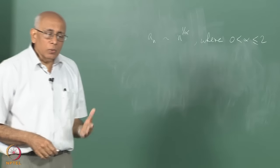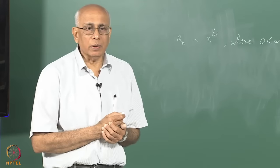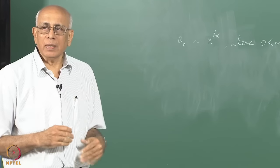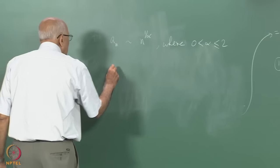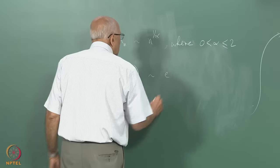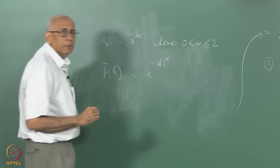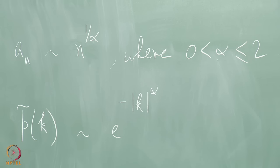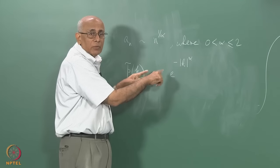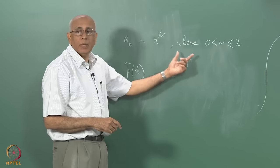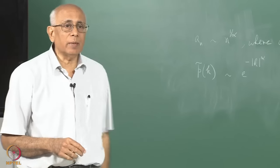Unfortunately, you cannot write down explicit expressions for the probability density function for a general stable distribution. But because the characteristic functions must be multiplicative, it turns out the characteristic function p̃(k) must be of the form e^(−const × |k|^alpha), apart from phase factors. For example, for a Gaussian this goes like e^(−k²), and for a Cauchy distribution it goes like e^(−|k|), so those are going to be stable distributions.